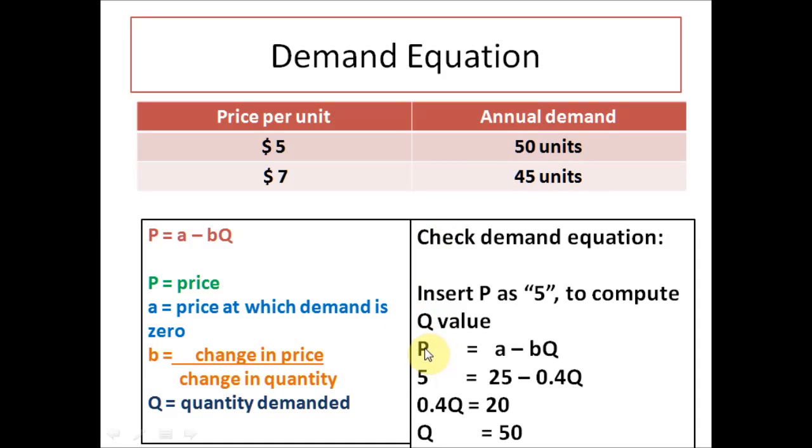So you would work it out. P equals a minus bQ. Insert P as 5. 5 equals 25 which is a, that we previously calculated, minus 0.04 which is the B that we previously calculated times Q.